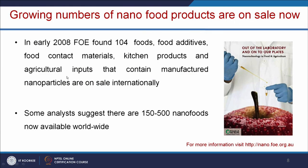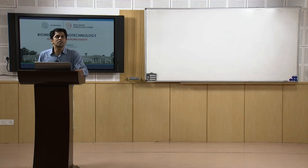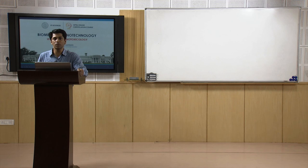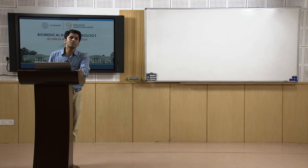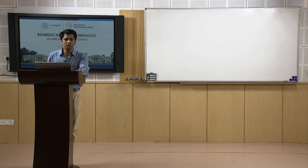As early as 2008, approximately 104 foods and food additives containing nanoparticles were on sale internationally. Some analysts suggest that almost 500 nano foods are available worldwide. We are not aware of what those are, and there is no labeling. For example, if you are using GMO food, there should be a GMO label. Similarly, if a food uses nano coatings or nano packaging, there should be a label to indicate this, but there is no such labeling.